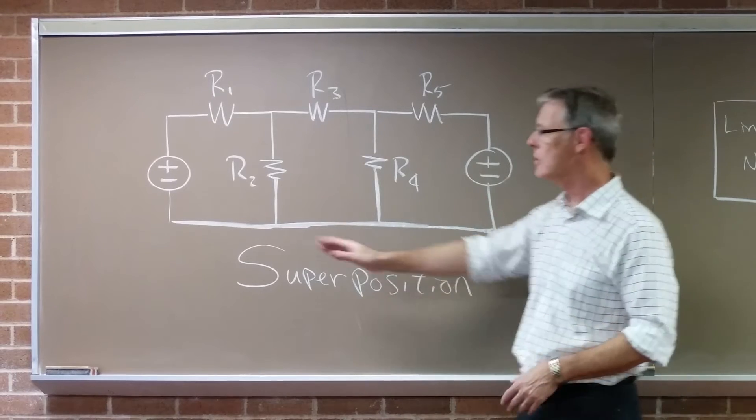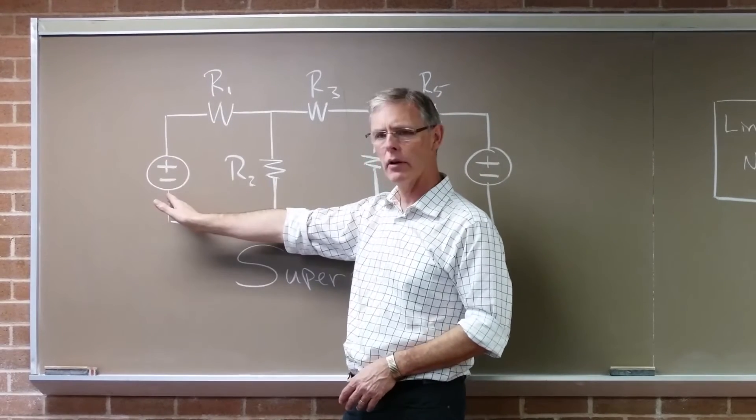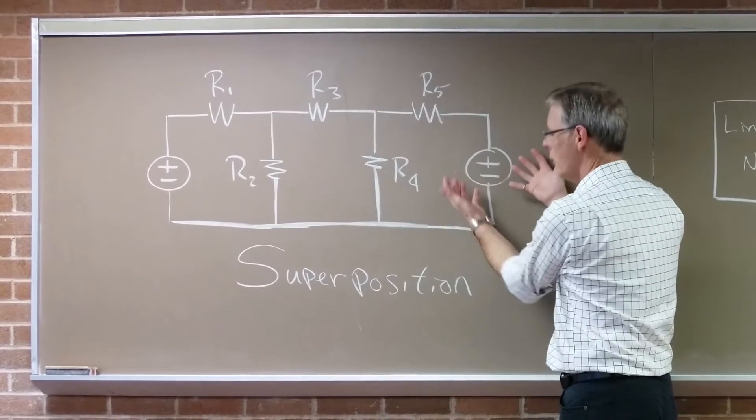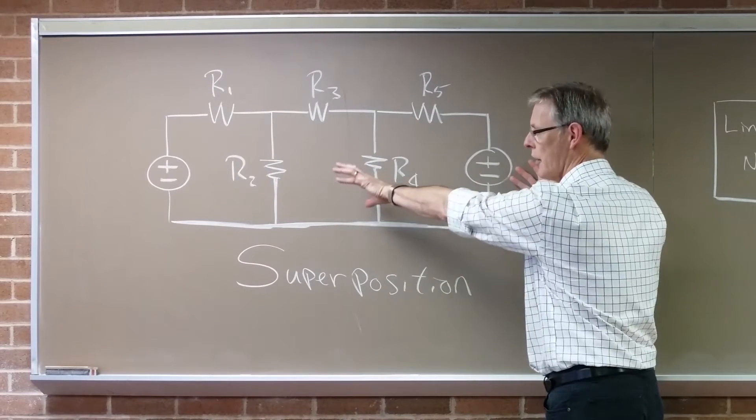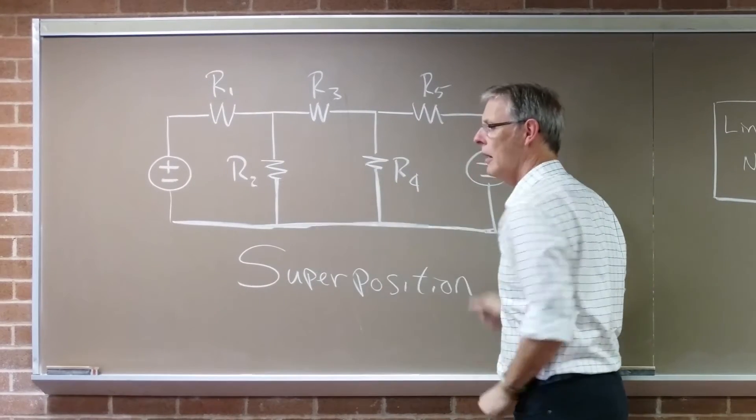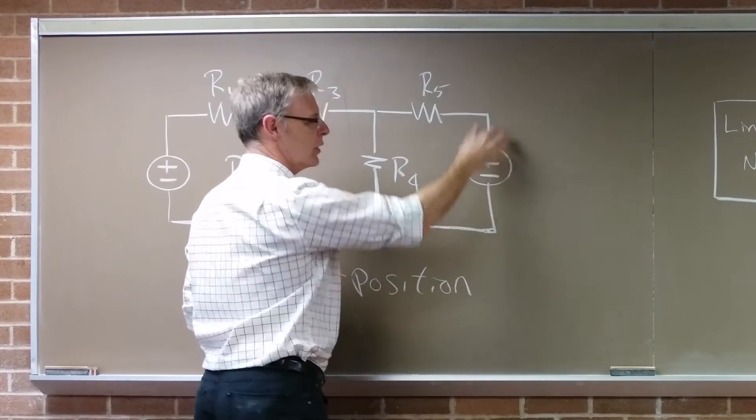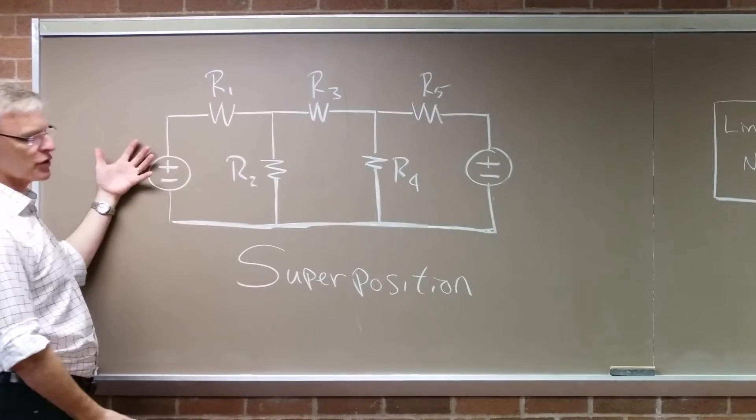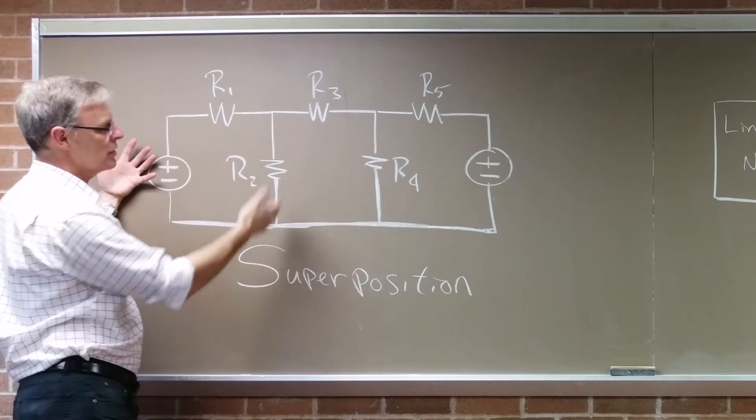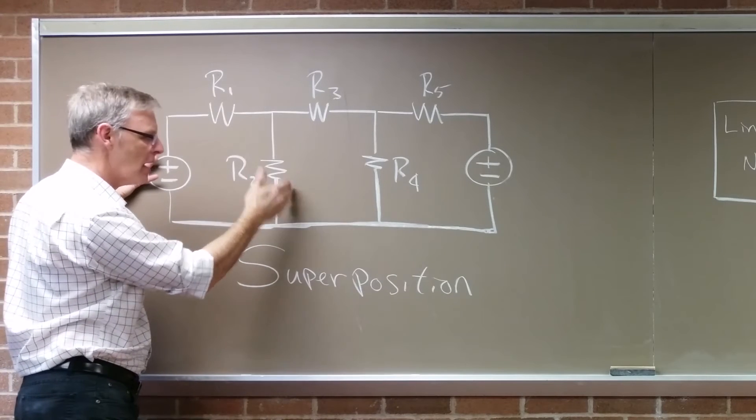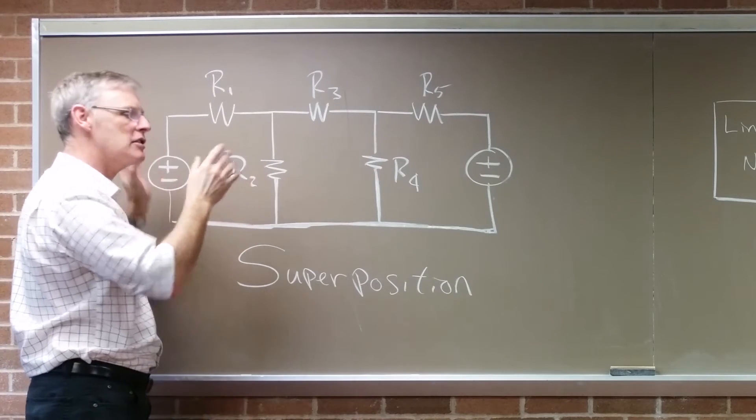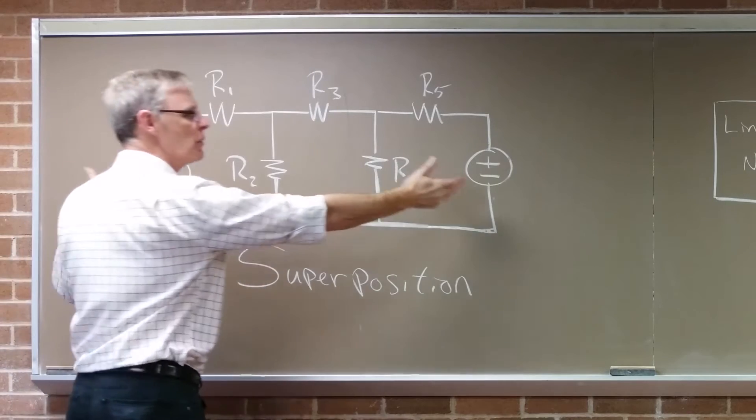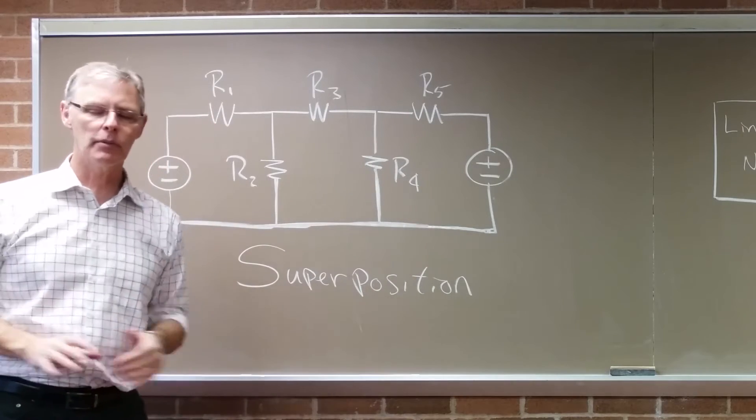So the way you do this is you take a voltage source and you short it out. You're left with one voltage source driving the circuit. There's a certain response here. Then you take the second voltage source and short it out, and you drive the circuit with the other source. The sum of the responses is the same as the response to both sources. That's what you're going to be doing in the lab today.